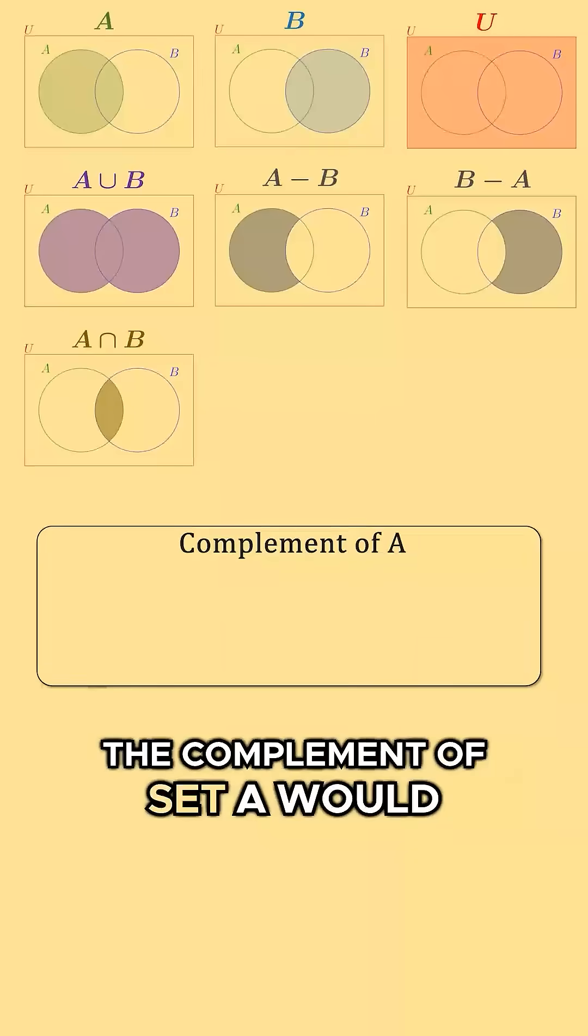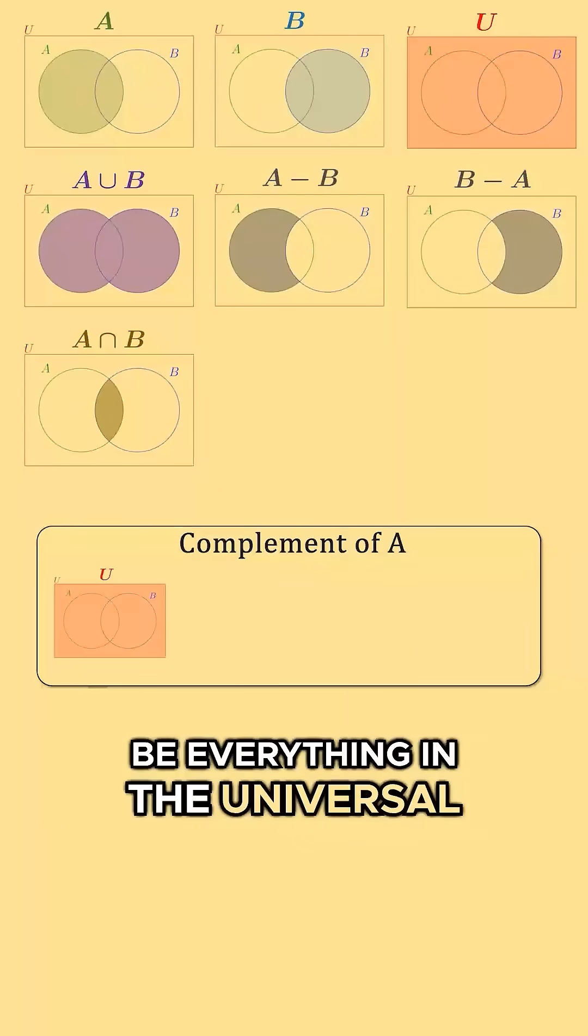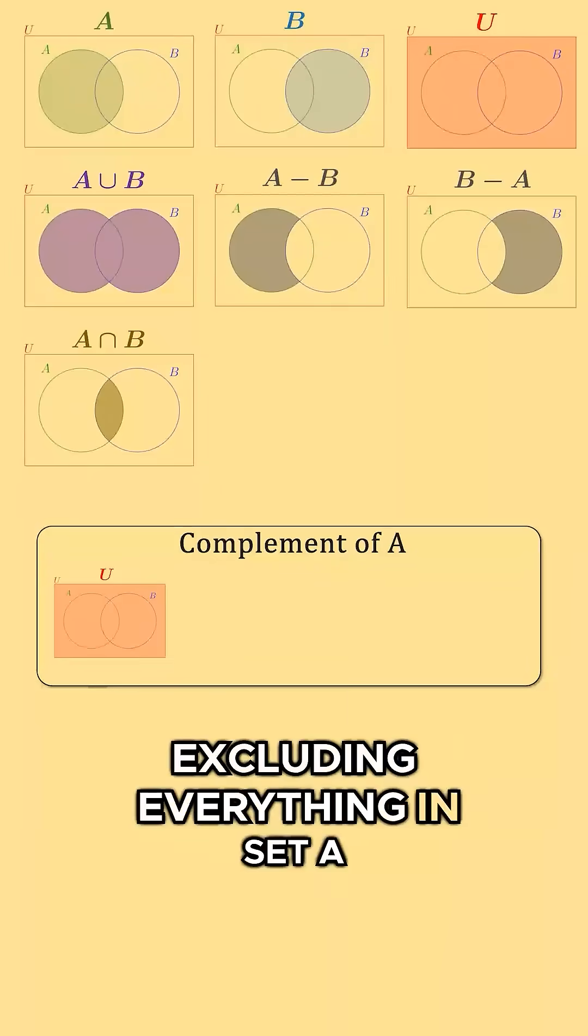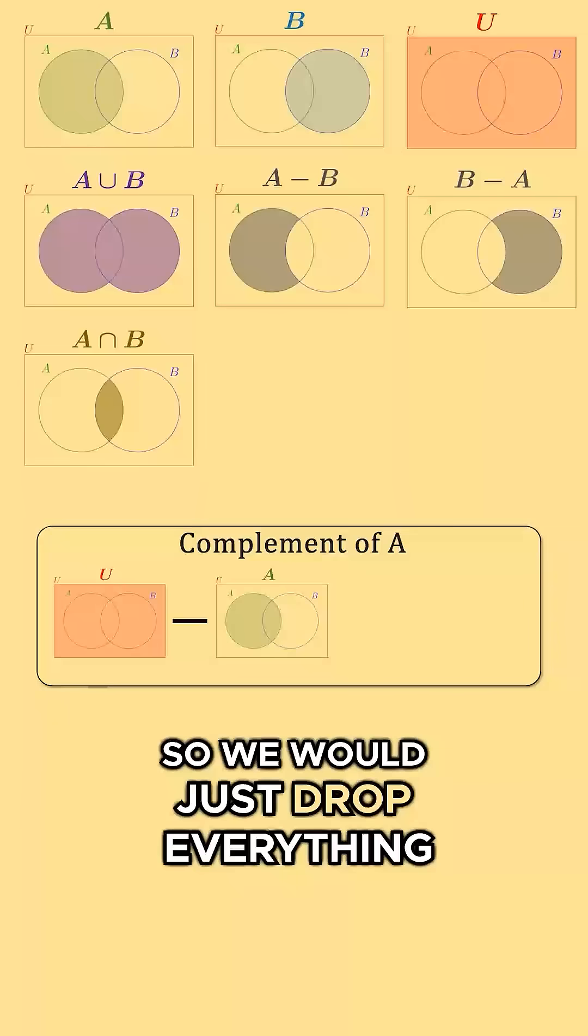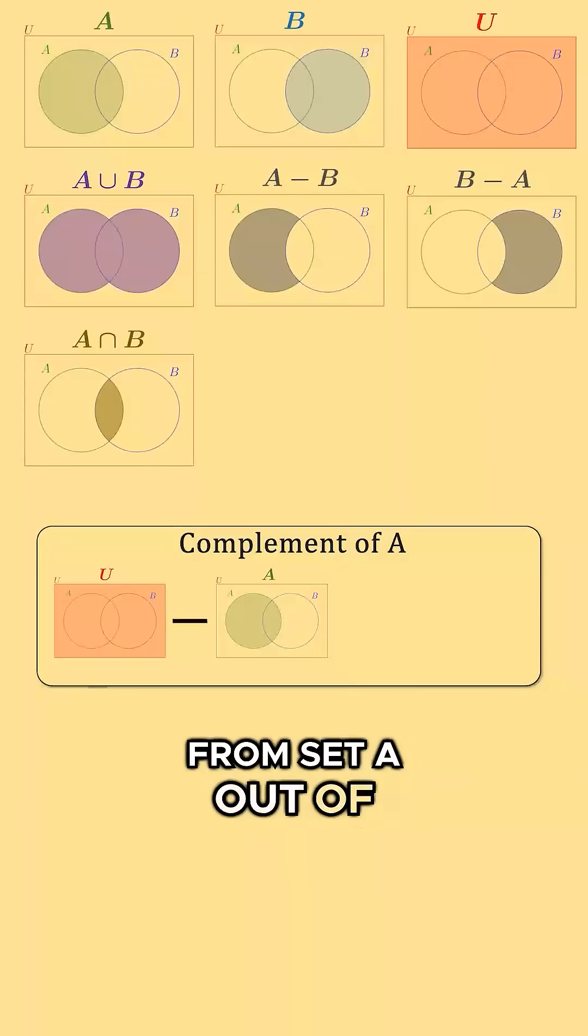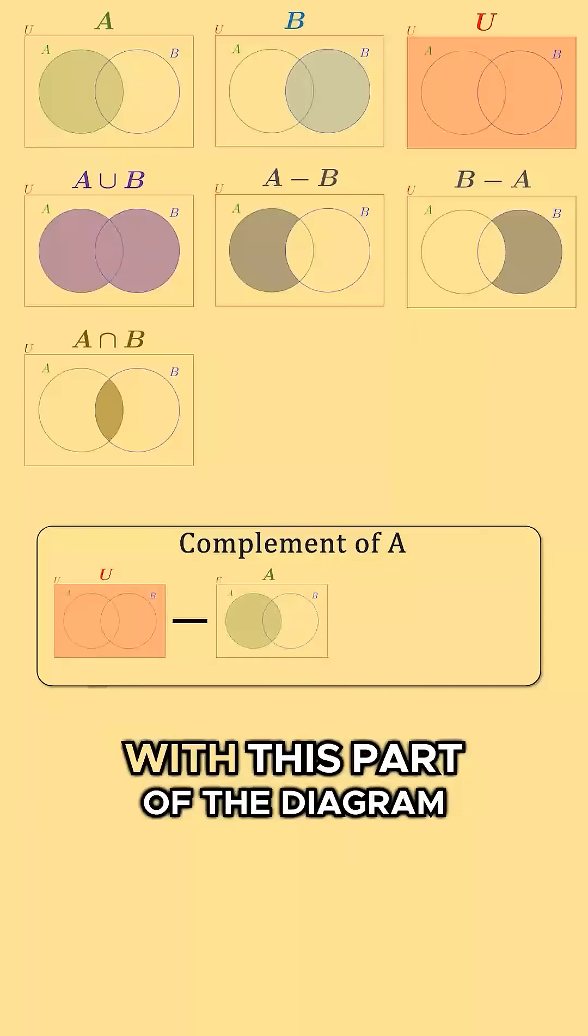The complement of set A would be everything in the universal set excluding everything in set A. So we would just drop everything from set A out of the universal set and are left with this part of the diagram.